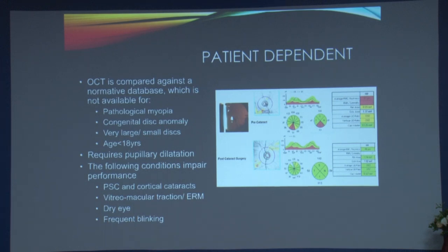Another example: a glaucoma suspect with inferior RNFL defect on pre-cataract surgery OCT. After cataract surgery the defect disappeared — confirming it was due to cortical opacities, not glaucoma. Green disease occurs when global average values appear normal but focal defects are missed — the average thickness looks normal but focal thinning is present.